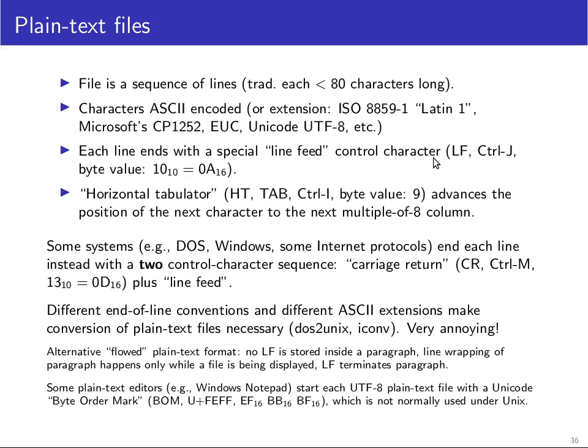A teletype terminal normally wants to first receive a carriage return and then, in some old cases even after a short time delay, a second control character to advance the paper by one line. The Unix authors thought this was quite wasteful having two bytes, so they established the convention that a line feed control character on its own is sufficient to terminate a line — you do not need two bytes for that purpose.